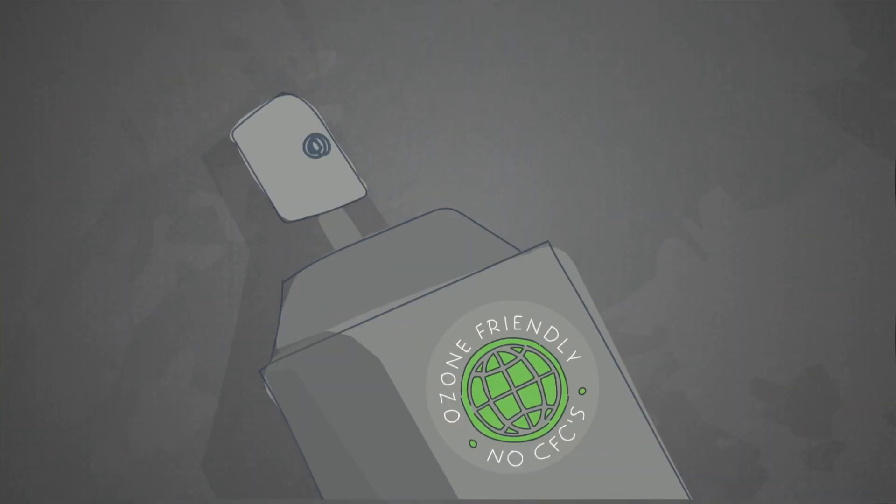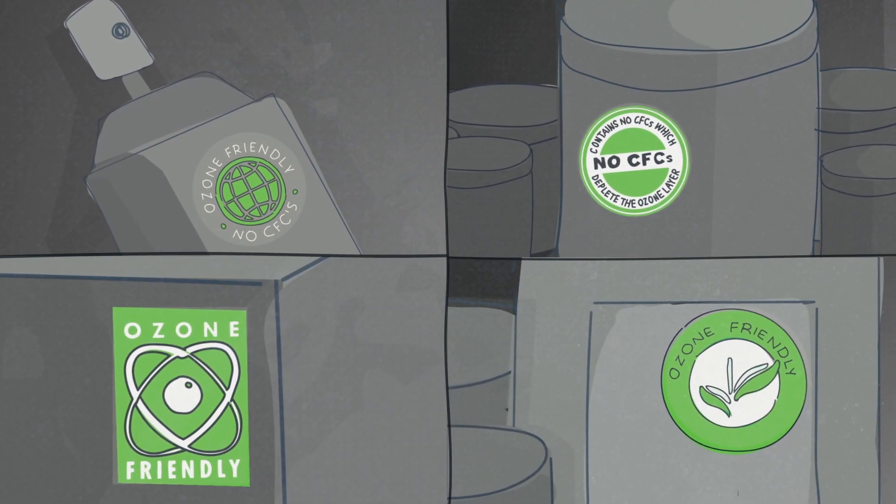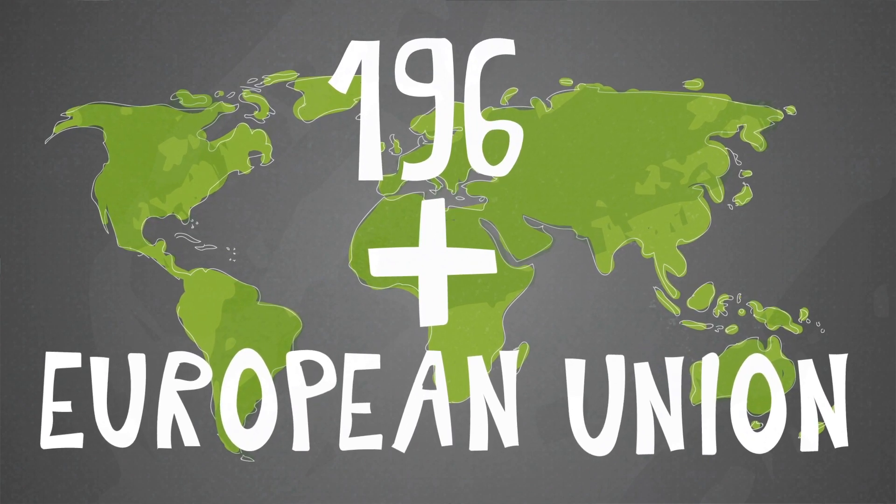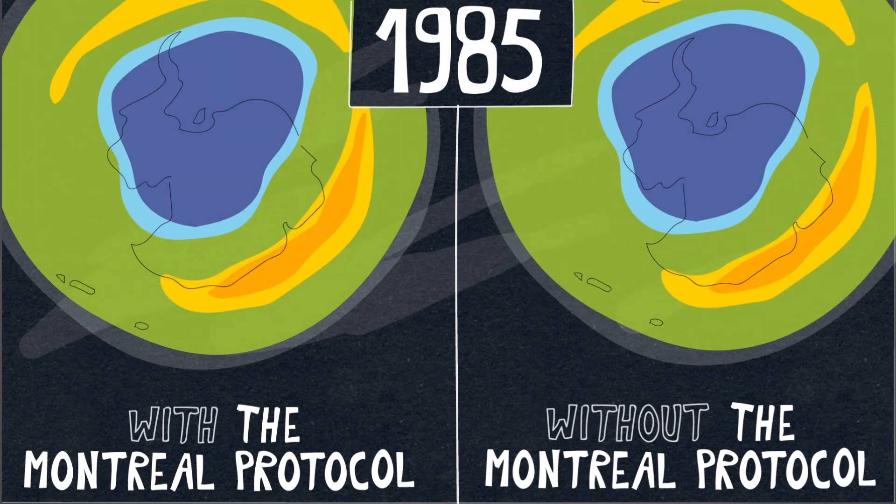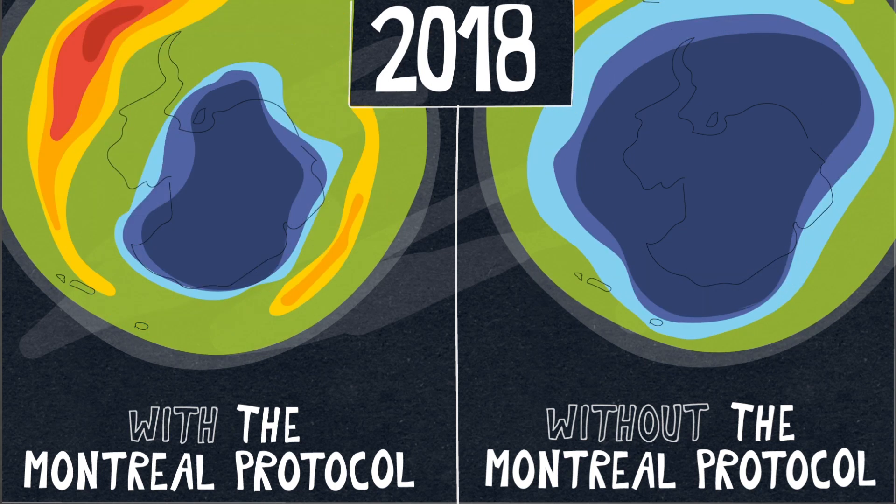This international treaty agreed to phase out the substances which play a role in ozone depletion and was ratified by 196 states plus the European Union. End result? The trend over the last five to ten years has been no increase in the Antarctic ozone hole.